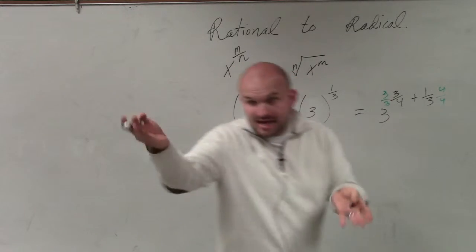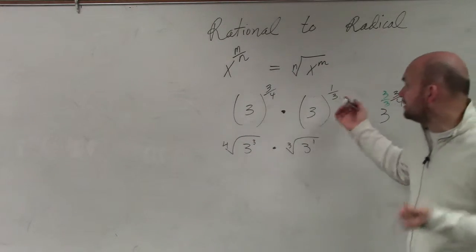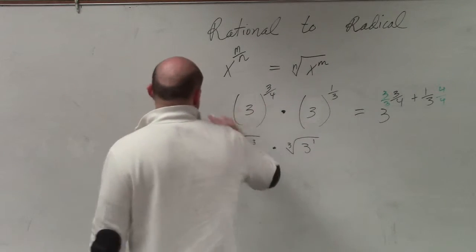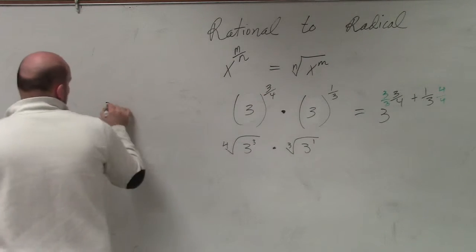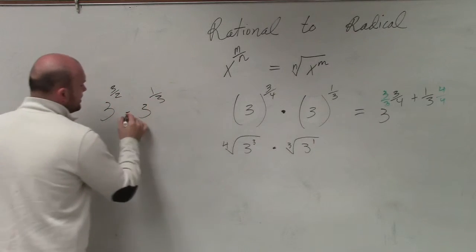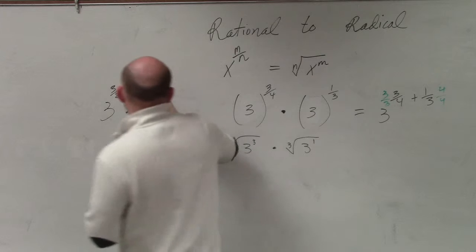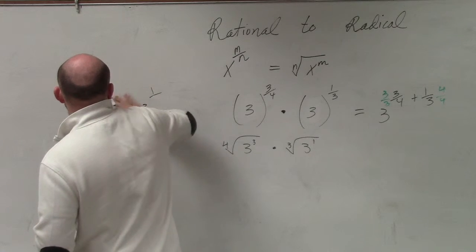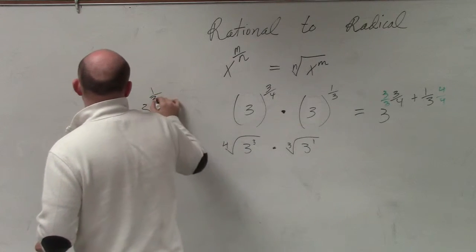So the problem is, yes, if you're looking at it that way, like, for instance, let's pretend this was, let me just write it like this. If this was 3 squared times 3 to the 1 third power, or 1 half, let's do 2 thirds and 1 third.